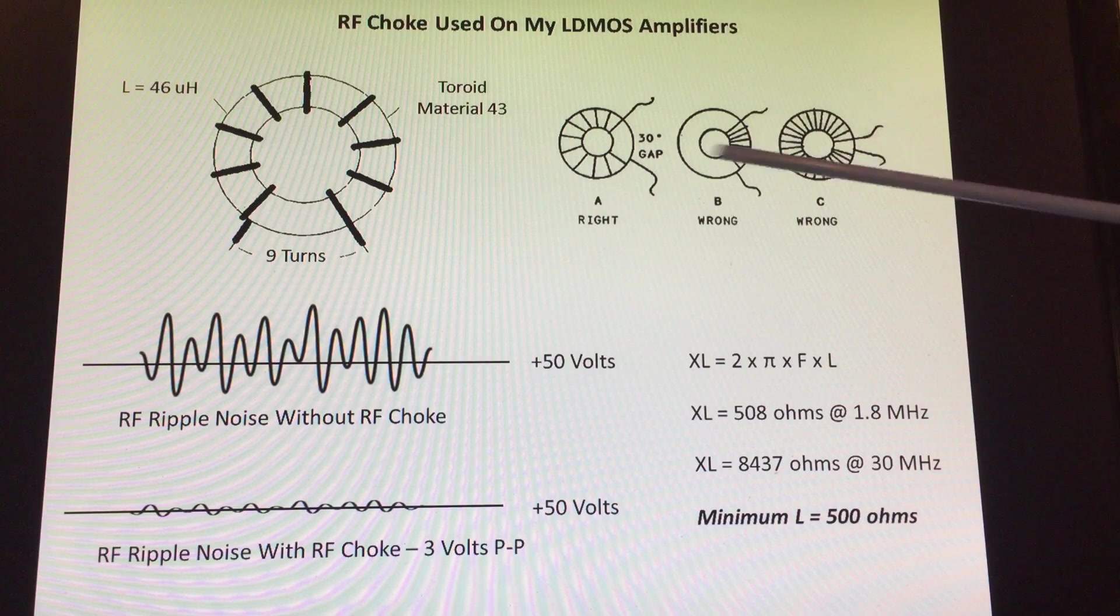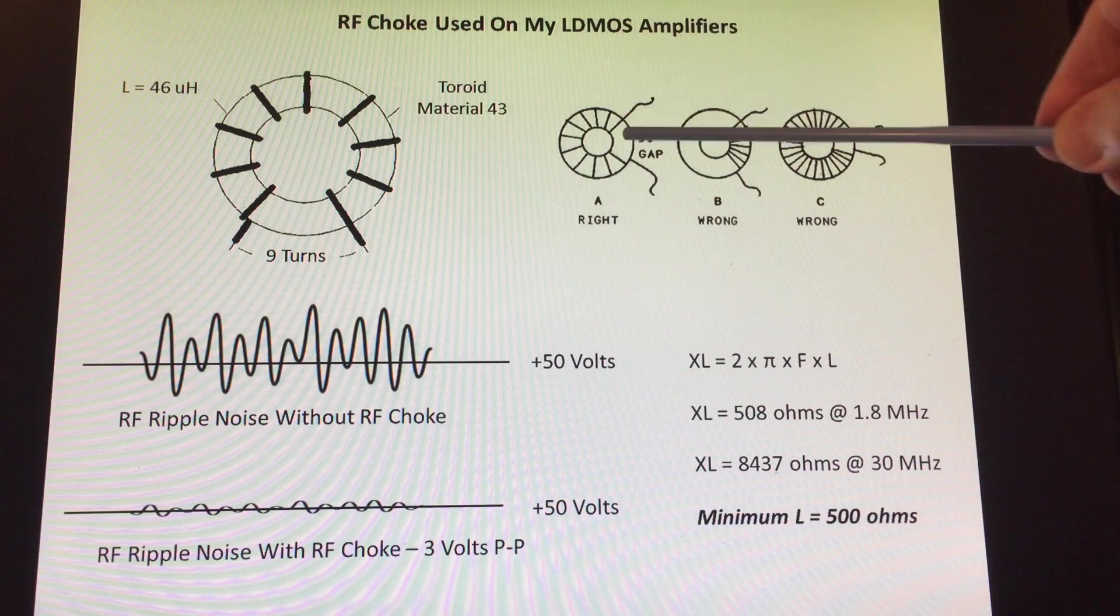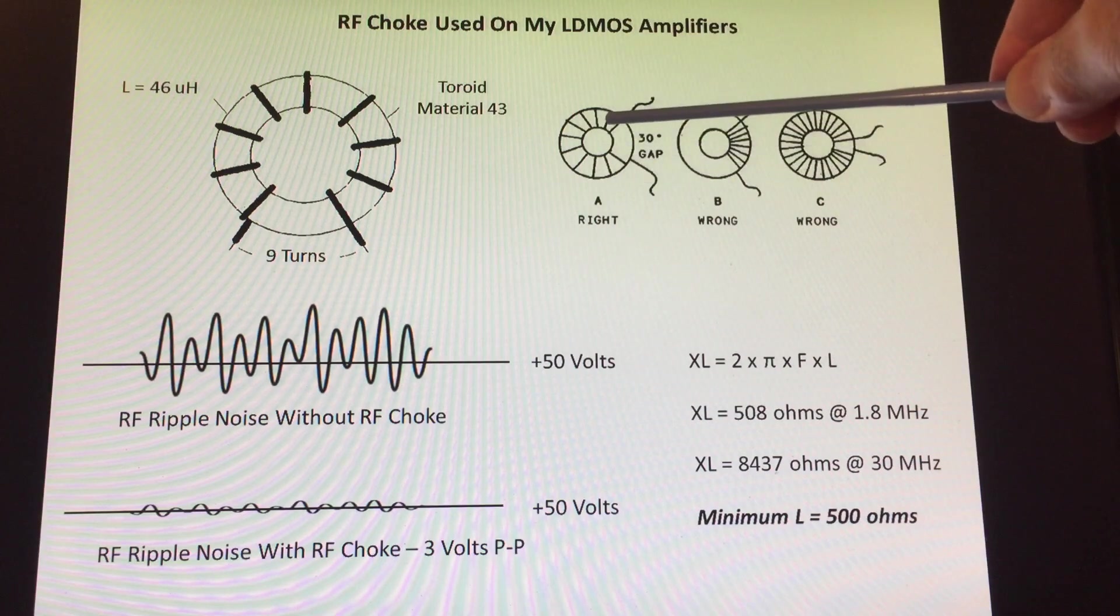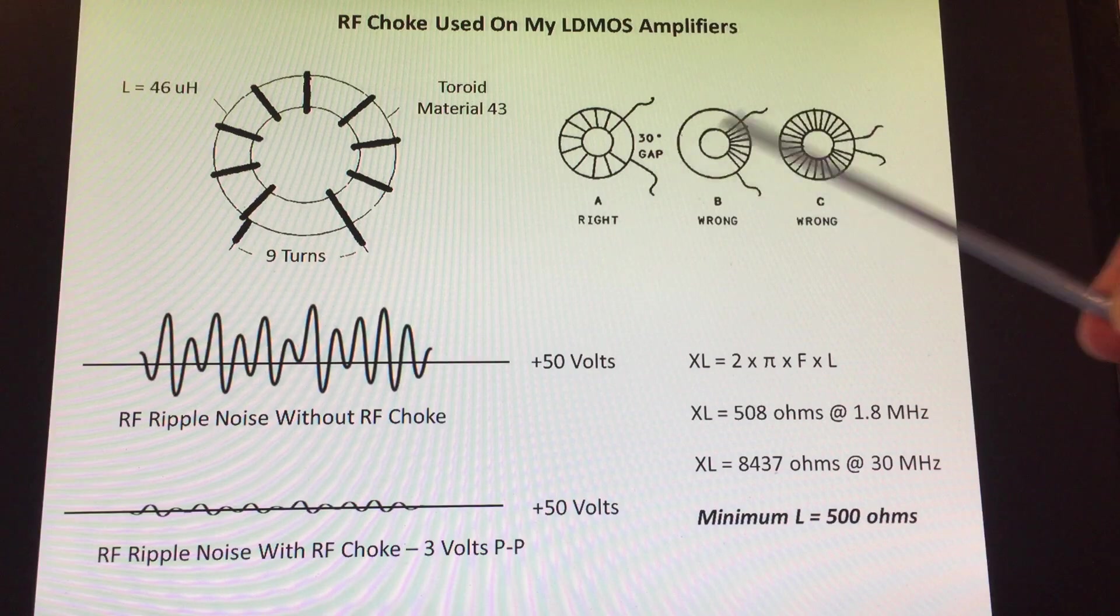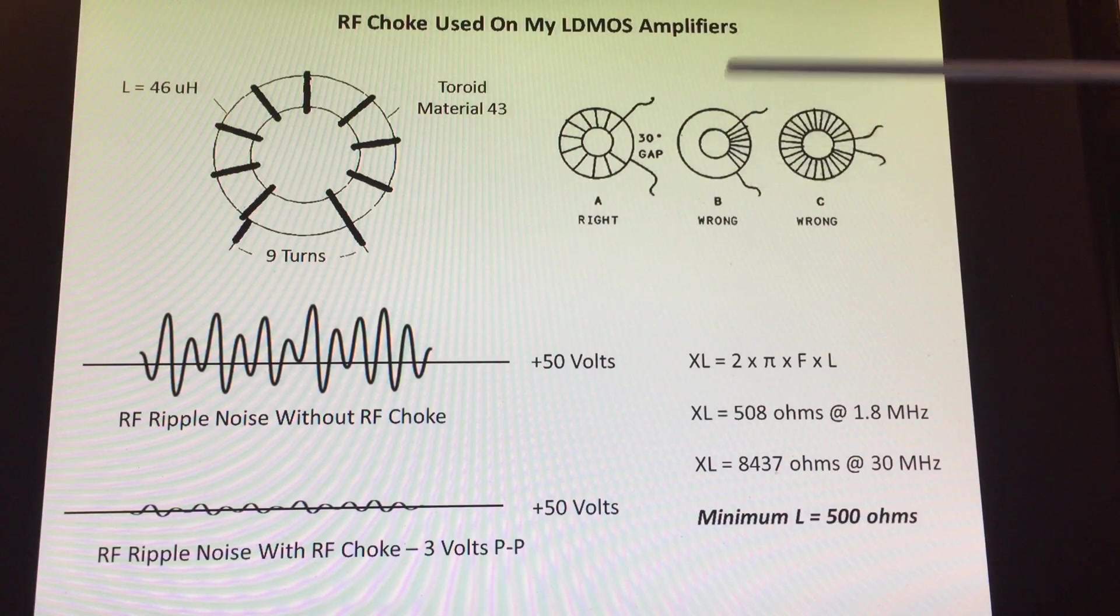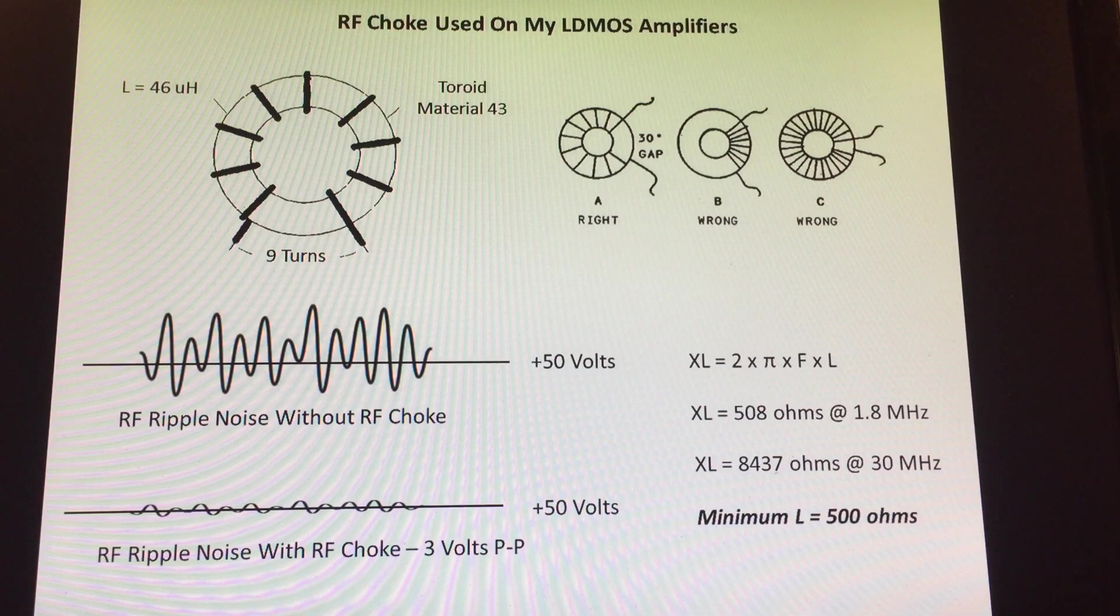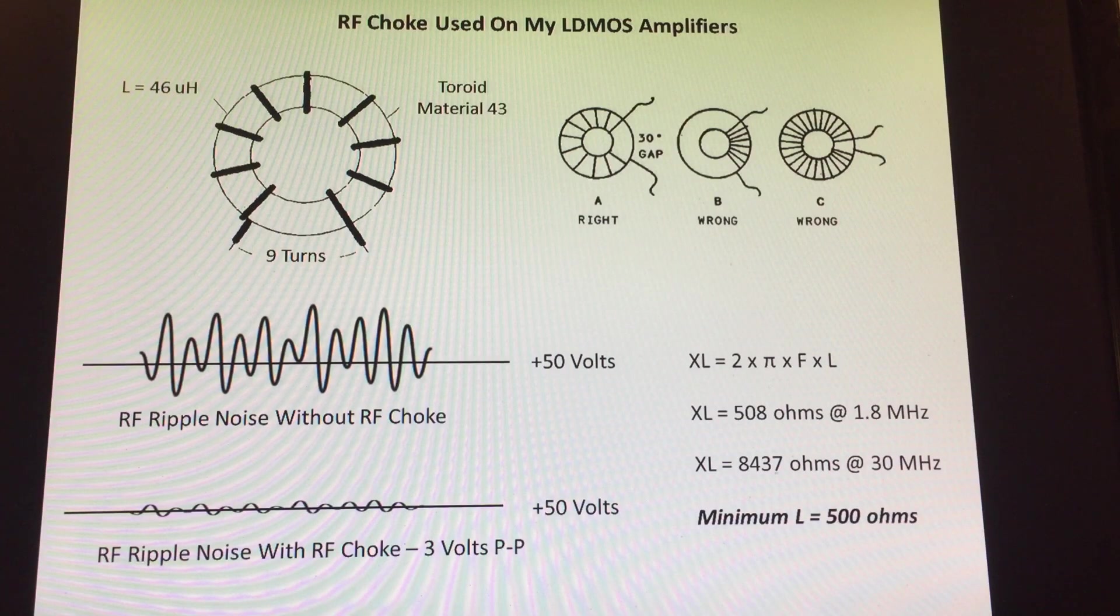This is just a simple diagram that shows the proper way to wind an RF choke. This is the correct way where we have a gap between the windings and we have a fair amount of spacing between each winding. These would be considered the incorrect way, the reason why is because the windings are very close and we could have capacitive coupling between the windings. What that will do is add capacitance to the choke and give it a resonant frequency. We want to basically design the choke so it doesn't have a very sharp resonant frequency but has a very broad response.